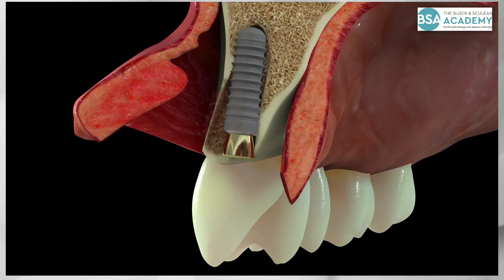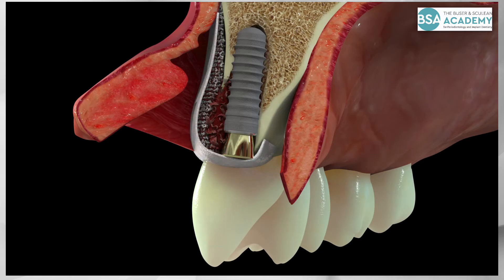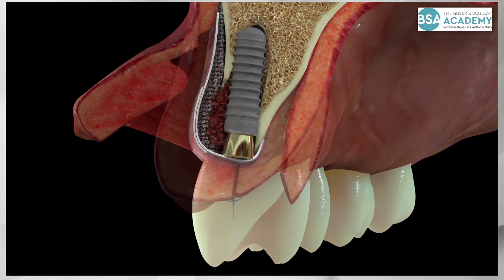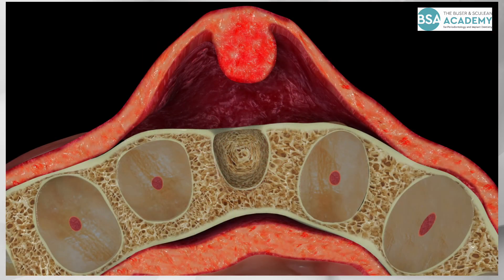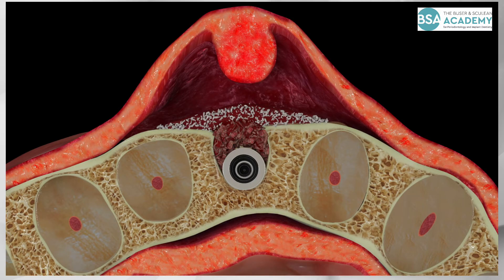The sagittal and coronal views show the various steps of contour augmentation. The bone chips fill the bone defect and will stimulate new bone formation. The bovine bone particles provide the contour augmentation and long-term stability, since they have a low substitution rate. The collagen membrane provides a barrier function to avoid the ingrowth of soft tissue cells.